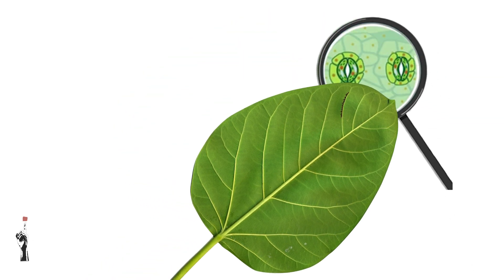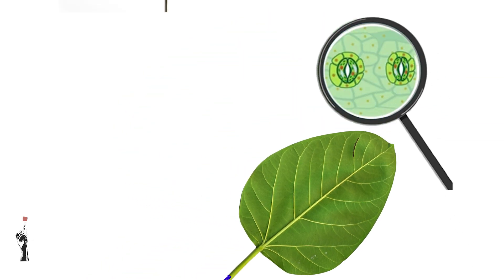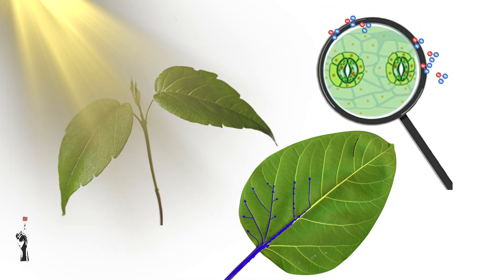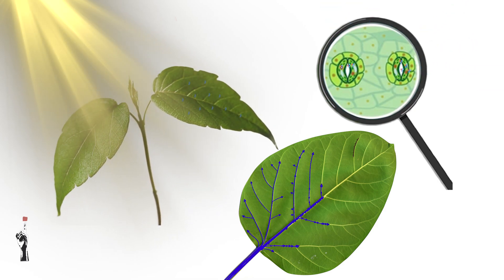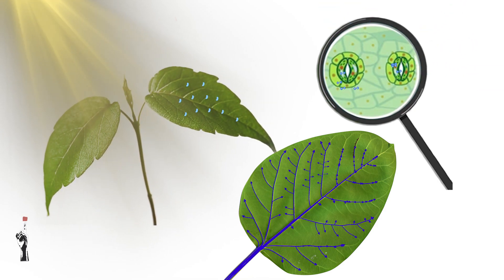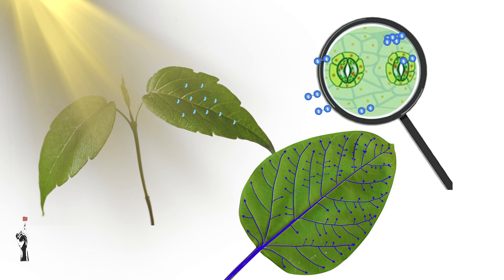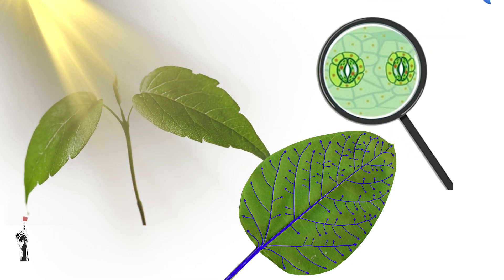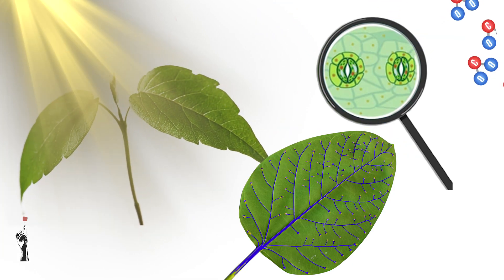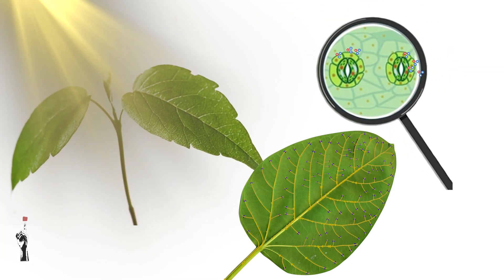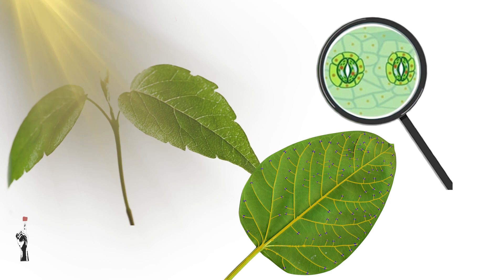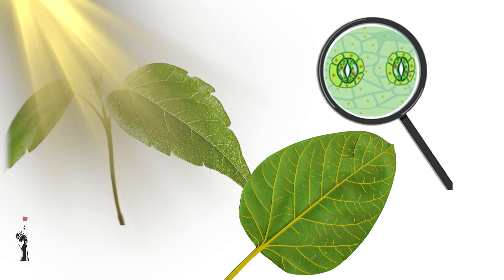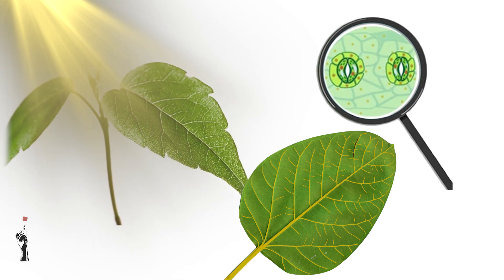The veins are crucial for supplying the necessary water for photosynthesis and for distributing the glucose produced. All these adaptations work together to ensure that the plant can effectively carry out photosynthesis — capturing as much sunlight as possible, absorbing carbon dioxide, transporting water, and distributing glucose throughout the plant.